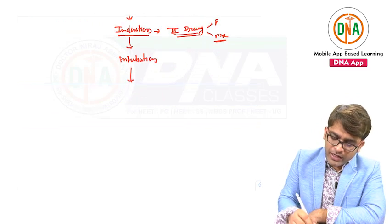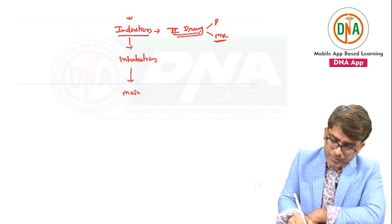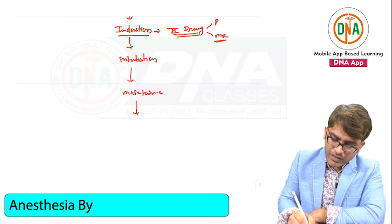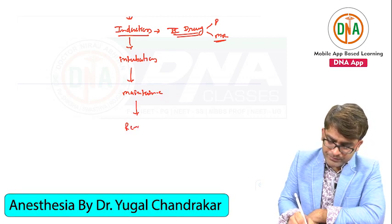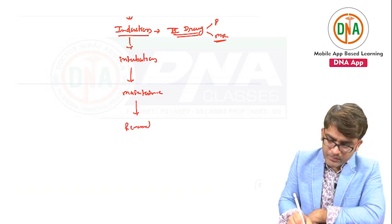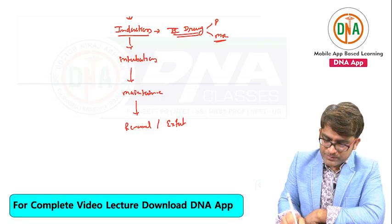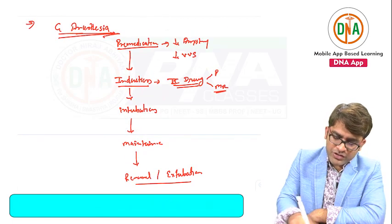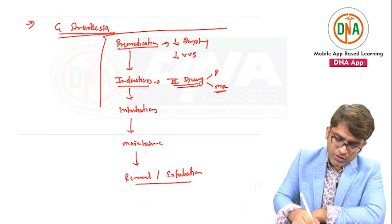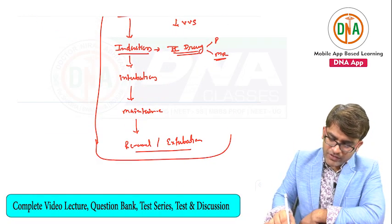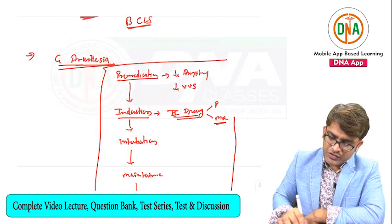After induction, we have to maintain — this is the maintenance phase of general anesthesia. Finally, we give reversal and extubate the patient. This is the complete GA protocol, or total sequence of general anesthesia.